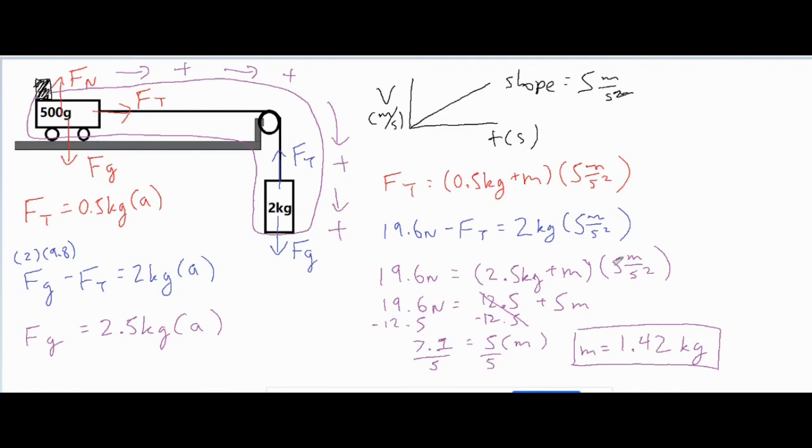So what I did is I just distributed the 5 to the 2.5 and then the M. So I got 12.5 plus 5 times M, subtracted the 12.5 from both sides, and then finished off by dividing by 5. And that unknown mass that's sitting on top of the cart ends up being 1.42 kilograms. So we are done with that problem.